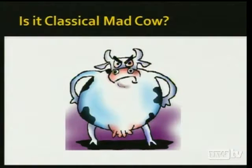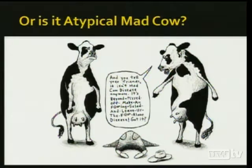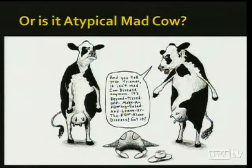A really relevant recent example of where strain typing comes in handy: there was a case of bovine spongiform encephalopathy found in California. If you're the FDA in charge of a multimillion dollar industry, it's nice to know if this is classical mad cow or atypical mad cow. And as the joke goes, it isn't mad cow disease anymore — it's 'beyond pissed off, make a salad and leave us alone' disease.